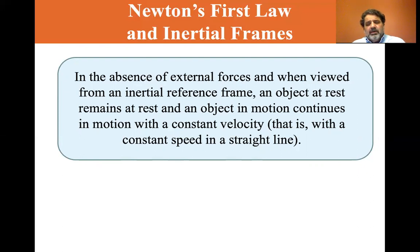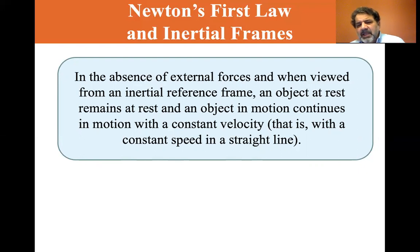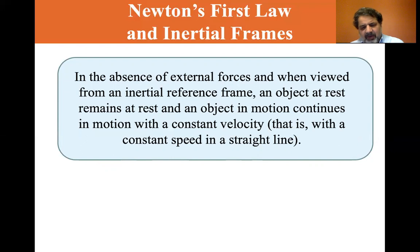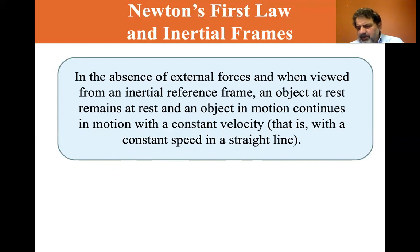Now you might say, well, wait a minute — the Earth is going in an almost circular orbit. Yes, because it's not straight line motion; it's being pulled by the gravity of the sun. But when they launched the Voyager satellites, and once they would get their gravitational assist from some of the Jovian planets, they were moving in a straight line unless acted upon by other planets.